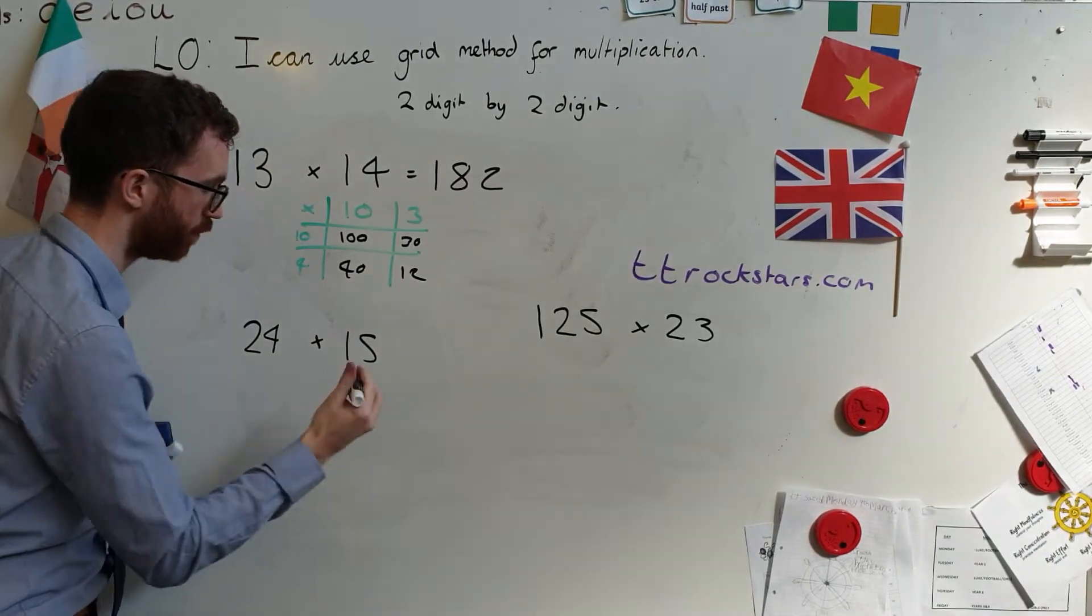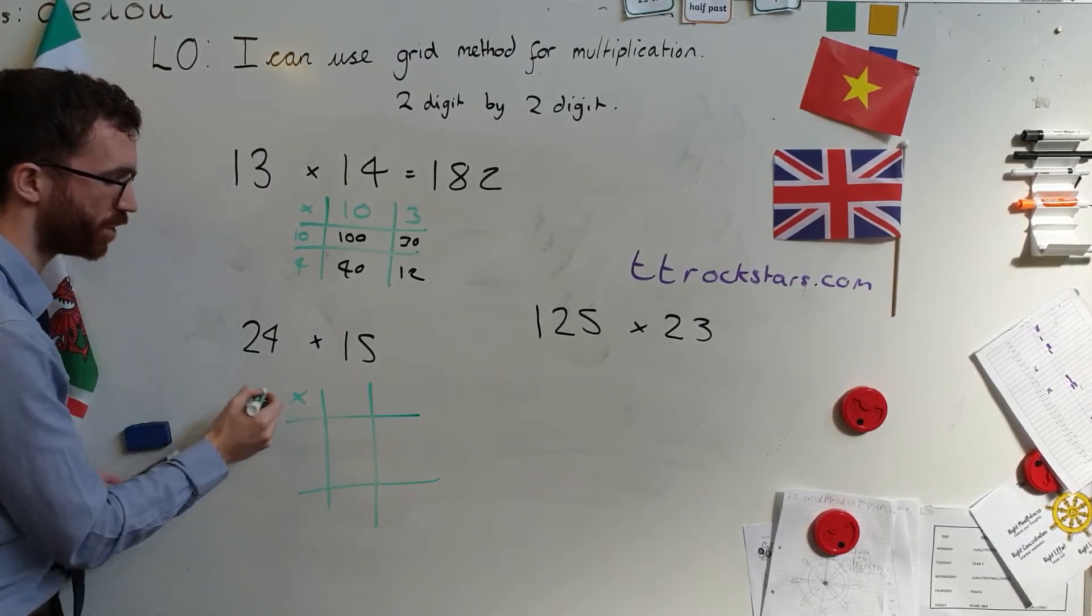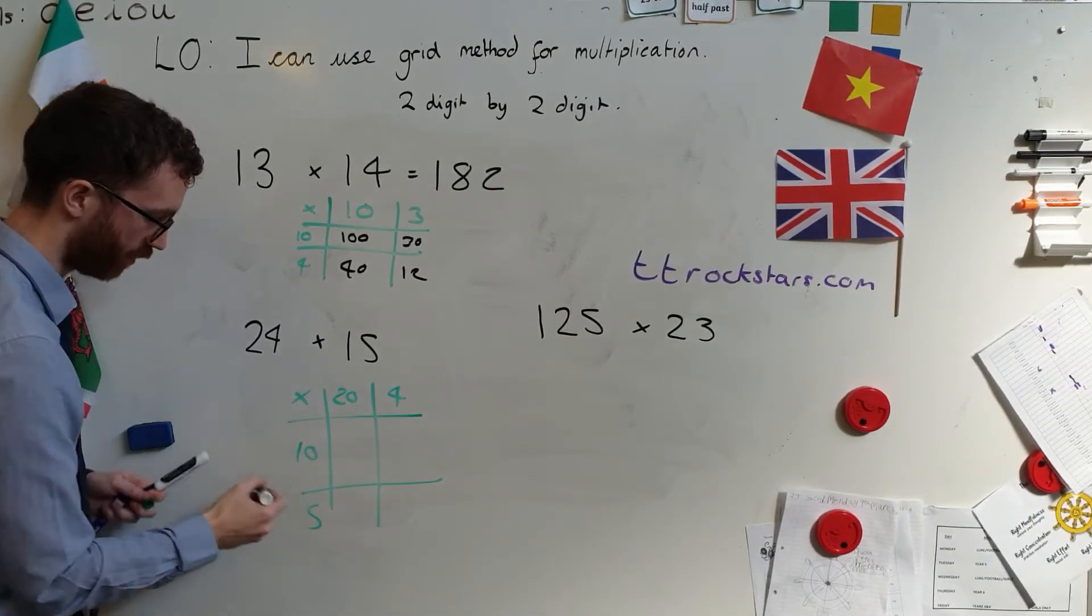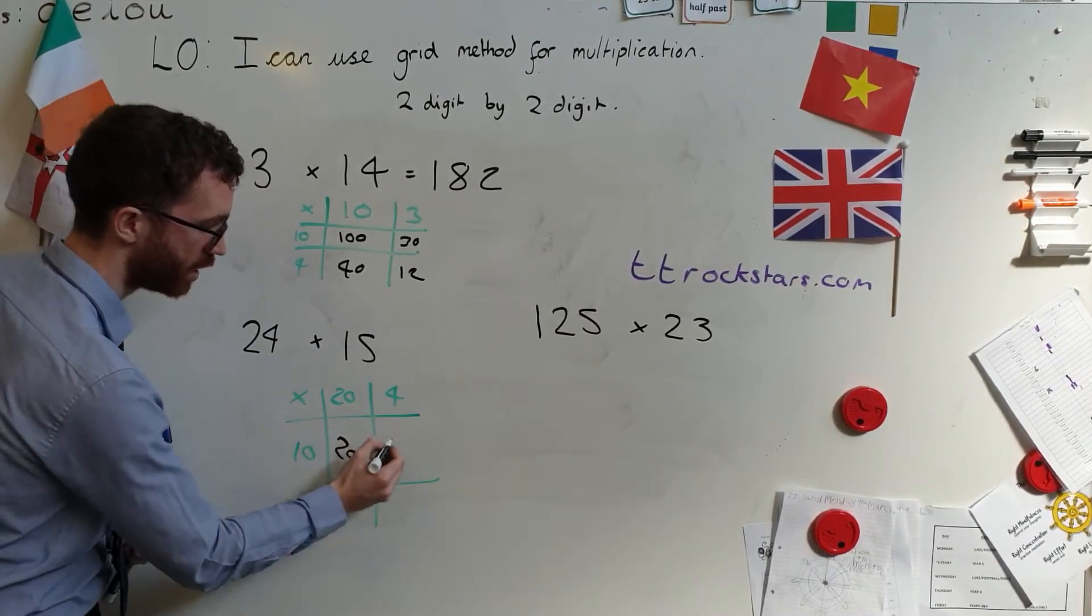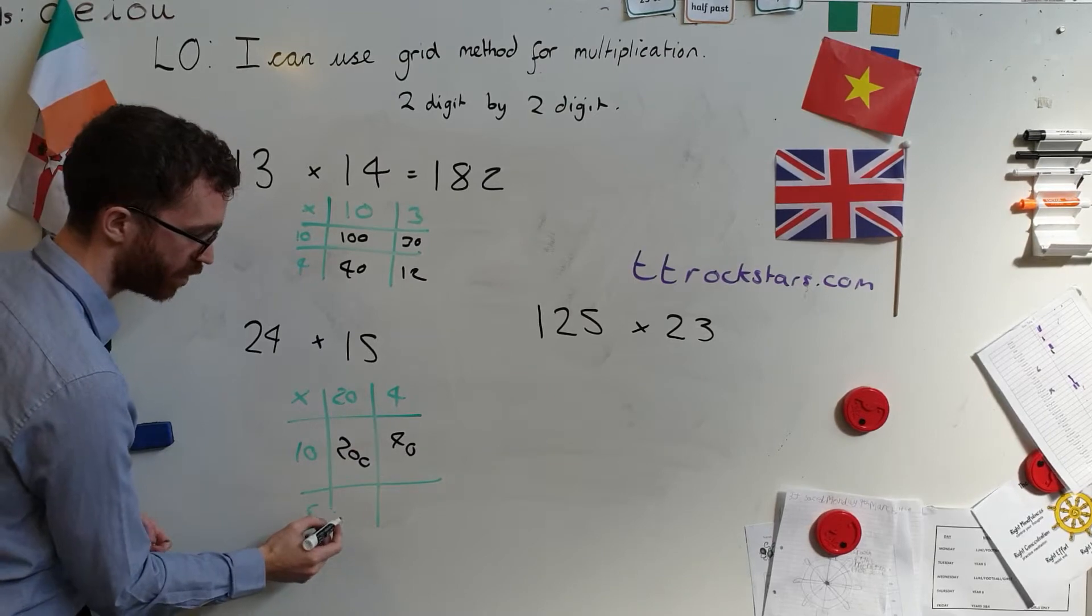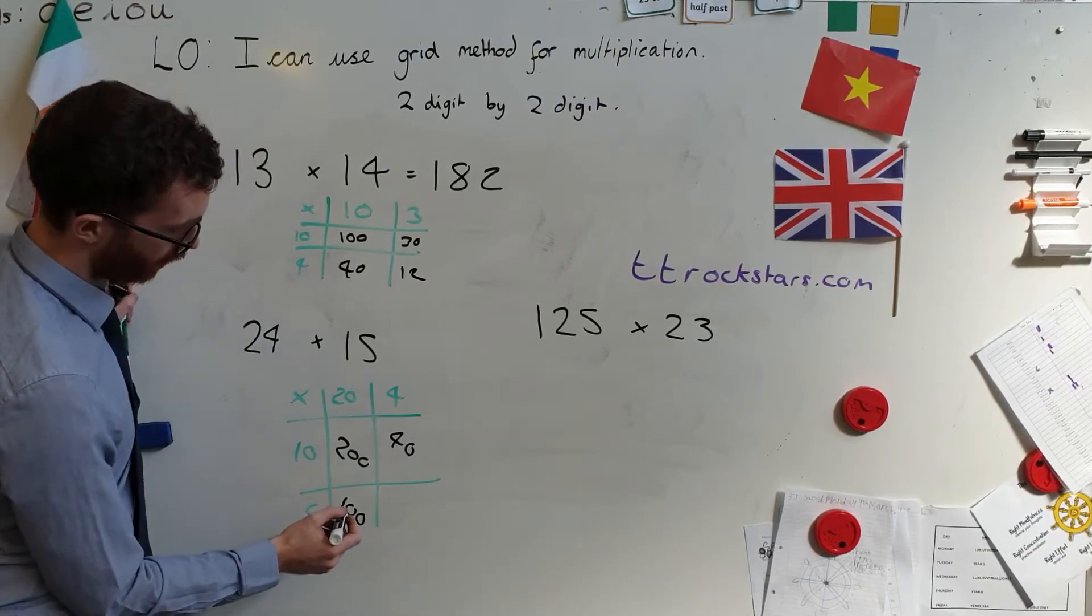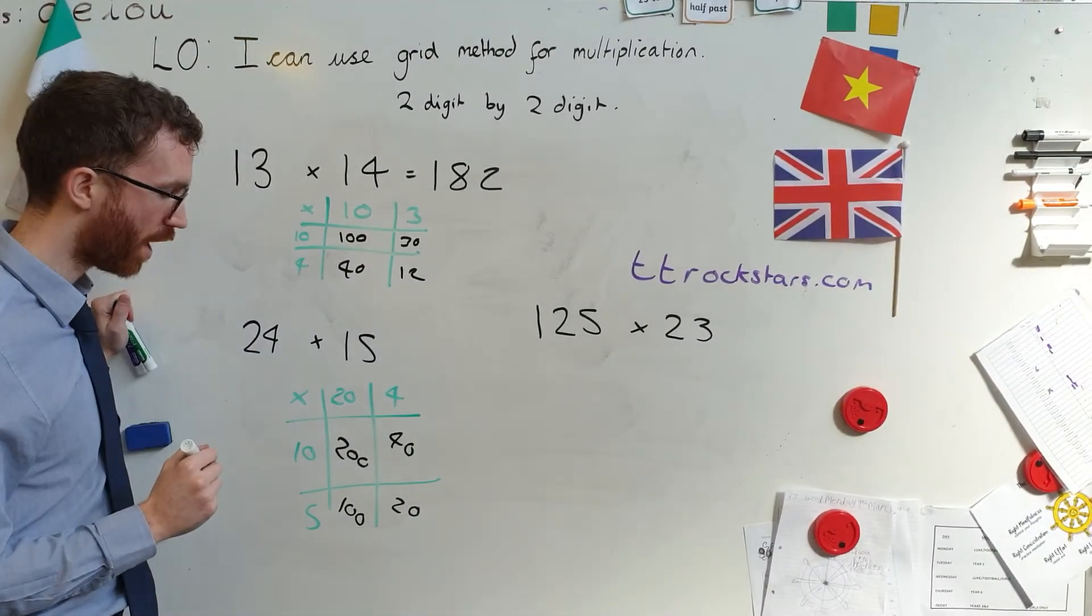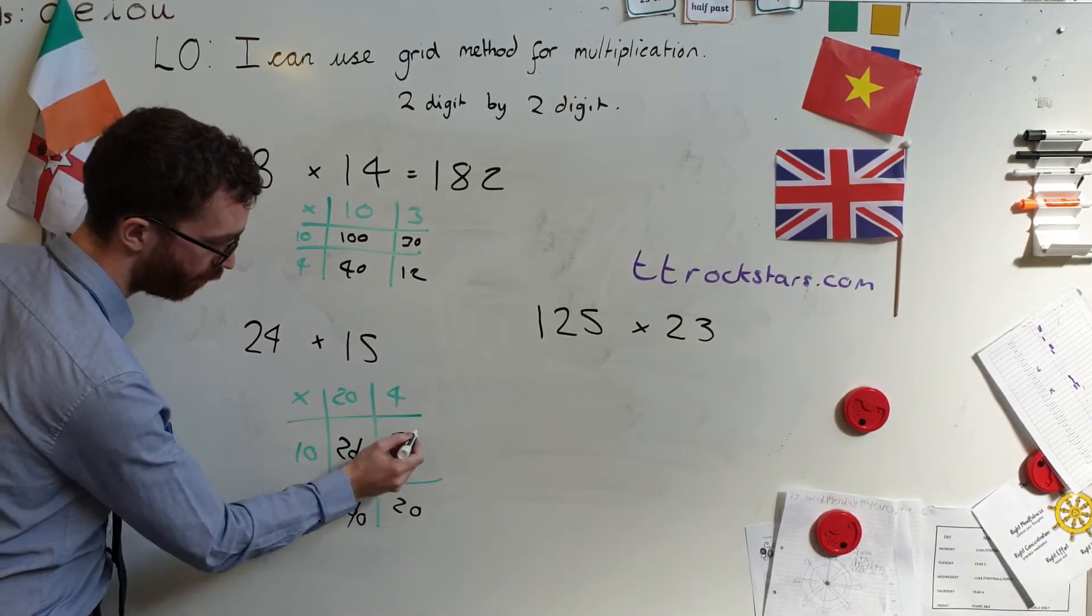24 times 15. Do my grid. Put in my partitioned numbers. Partition it. 20 and 4. Partition it. 10 and 5. Let's go. 10 times 20. 200. 10 times 4. 40. 20 times 5. Remember doing 20 times 5 this time. So, what is 20 times 5? It is 100. What is 5 times 4? It is 20. Happy with all of that? All I need to do now is add it all together. So, 200 plus 100 is 300. 340. 360.